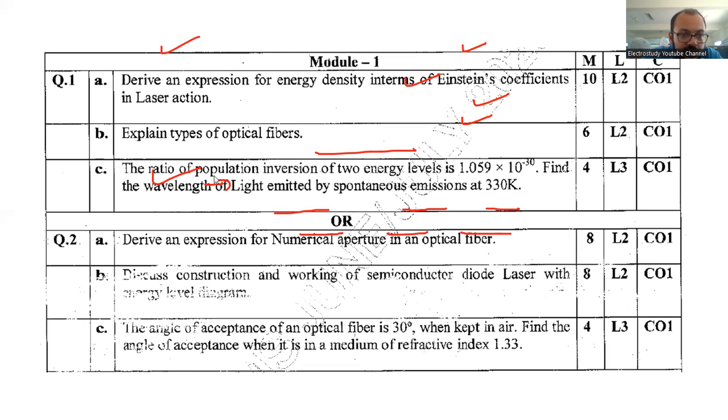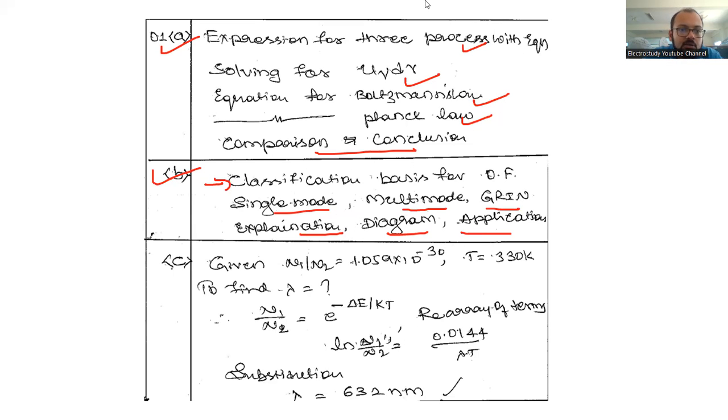If I talk about 1C, there's a problem which has the weightage of 4 marks. The main formula you are supposed to remember. Wavelength is to be calculated. These are the things provided in the question: temperature 330 Kelvin, then this equation N1/N2 equals e to the power minus delta E by KT. Boltzmann constant is already provided. Ultimately, substitute and you should get 632 nanometer.